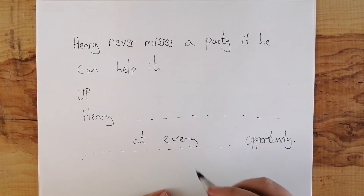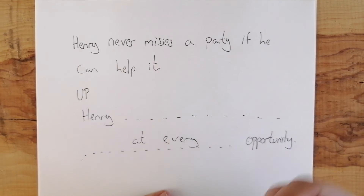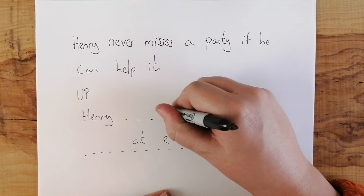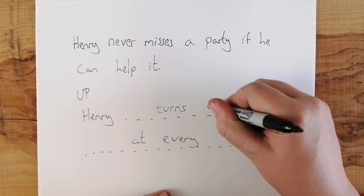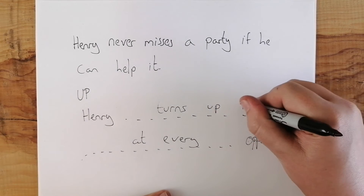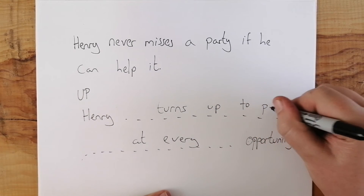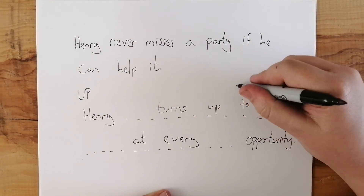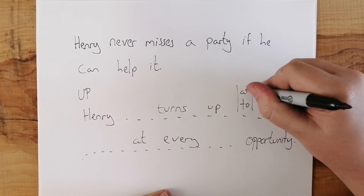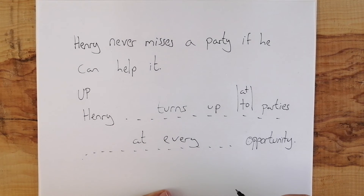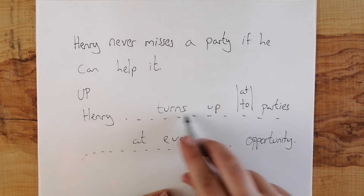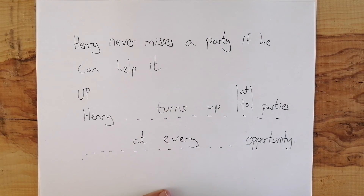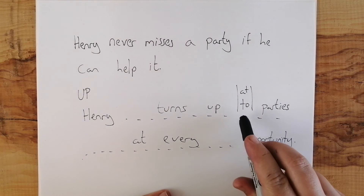A phrasal verb that gives us the idea of he doesn't miss — so 'Henry turns up to parties at every opportunity,' or you could also say 'Henry turns up at parties at every opportunity.' That's one, two, three, four, five, six words — perfect.